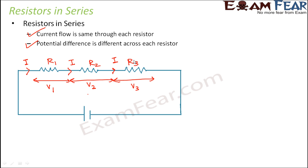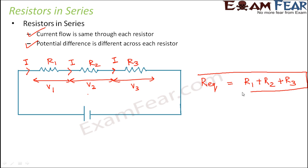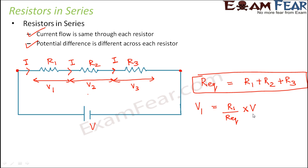When we talk about the overall circuit, how do we calculate the equivalent resistance? In a series combination, equivalent resistance is equal to the sum of the resistances. So R equivalent will be equal to R1 plus R2 plus R3. The potential difference across each resistor: V1 equals R1 divided by R equivalent, multiplied by V, where V is the net potential difference. Similarly, V2 equals R2 divided by R equivalent into V, and V3 equals R3 divided by R equivalent into V.